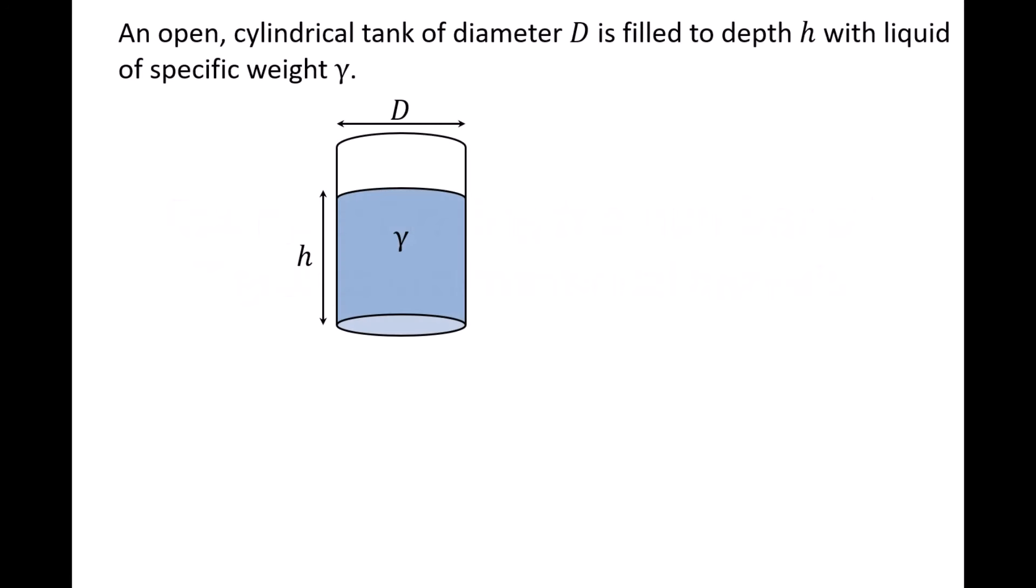Here we have an open, cylindrical tank of diameter D that contains a liquid. The liquid has a specific weight gamma and is filled to a height h in the tank.